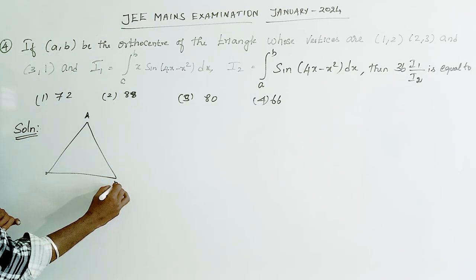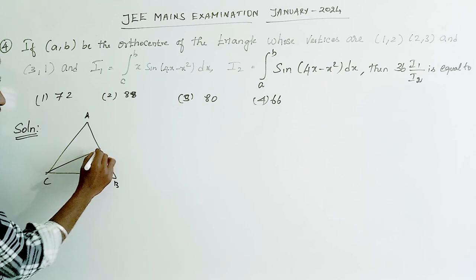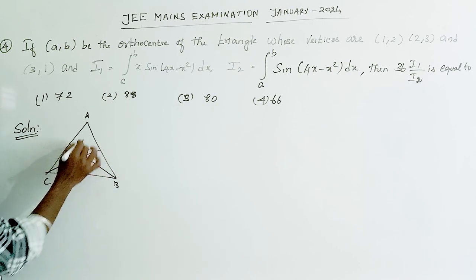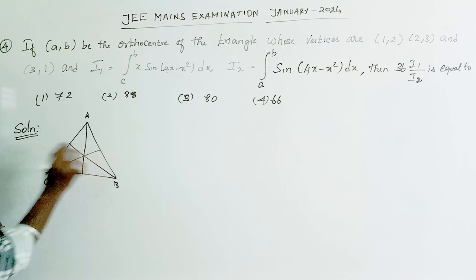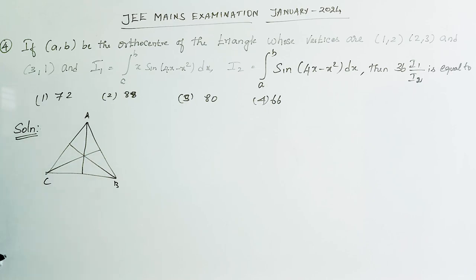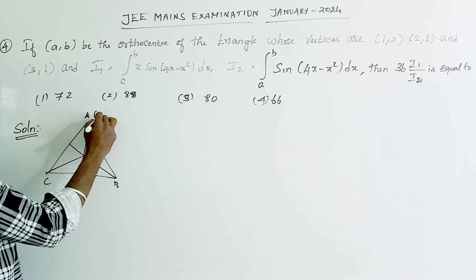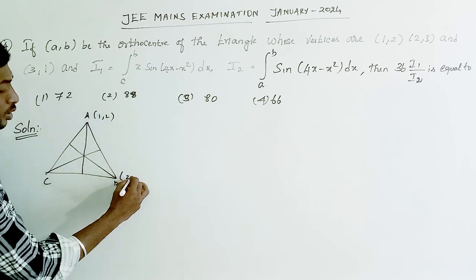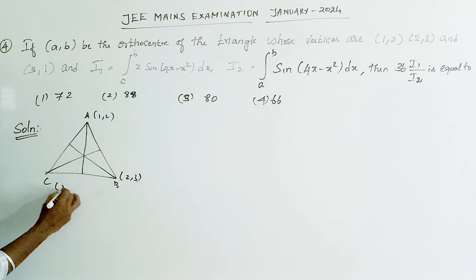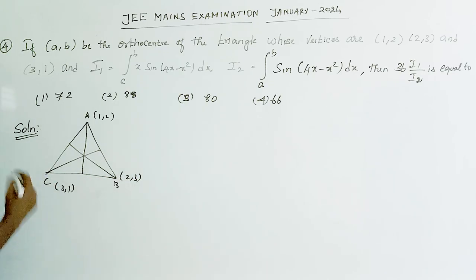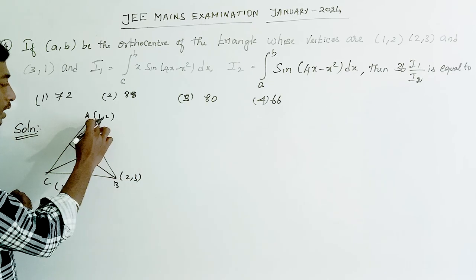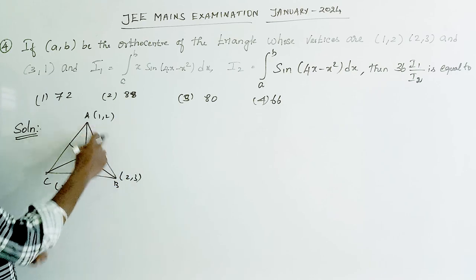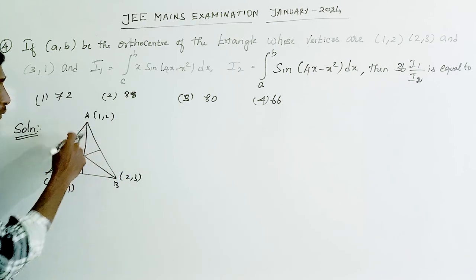The orthocenter is connected to the vertices. Point A is (1,2), point B is (2,3), point C is (3,1). The altitude from C is perpendicular to AB, and the altitude from A is perpendicular to BC.